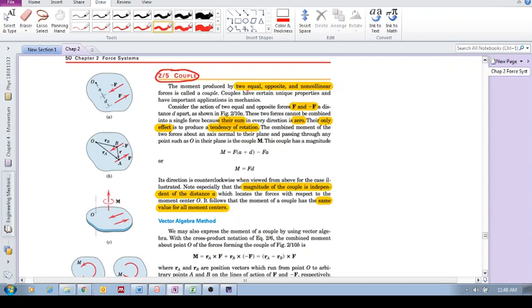They are non-collinear, so equal, opposite, and non-collinear, meaning they're not in the same line, and they're acting on this object. That is a couple. This setup causes something called a couple moment.